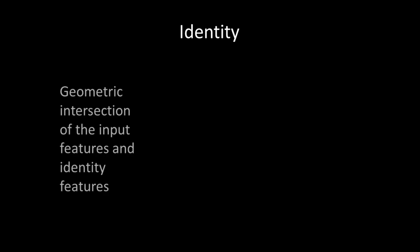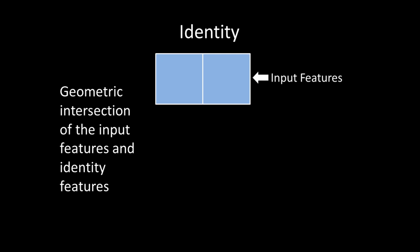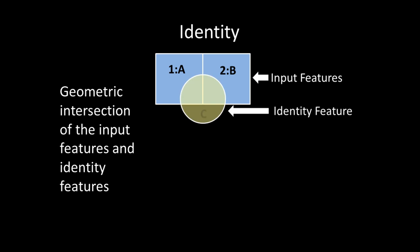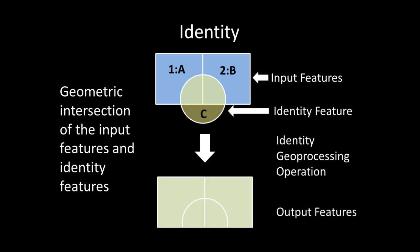Identity is where the geometric intersection of the input features and identity features are computed, and portions of input features that overlap identity features will receive attributes of the identity feature. For example, given two input features with attributes A and B, and an identity feature with attribute C, after the identity geoprocessing operation is run, four output features will be created. Features created where the identity features touch the input features will have attributes of both the input feature and identity feature.